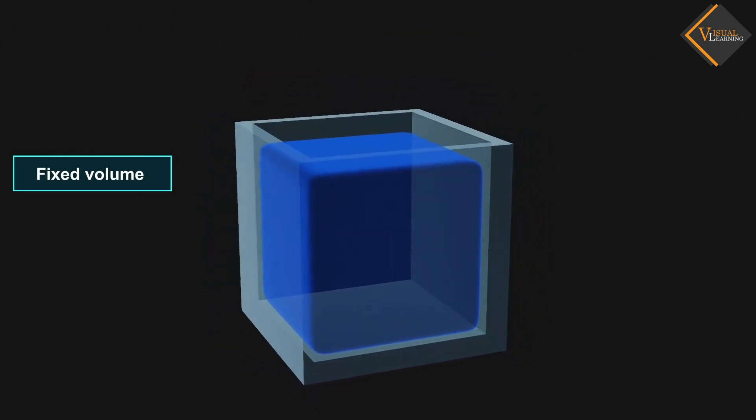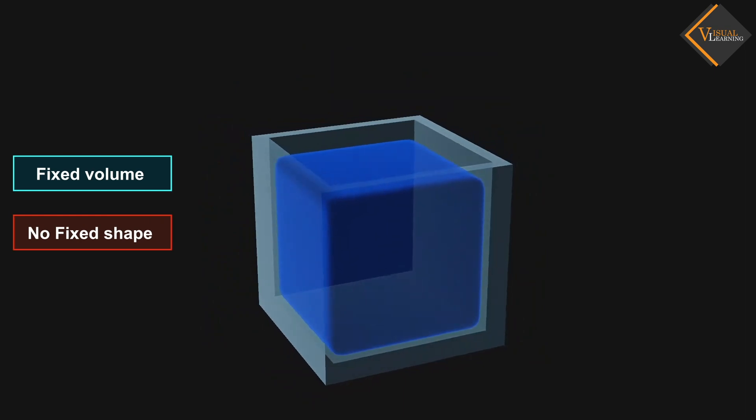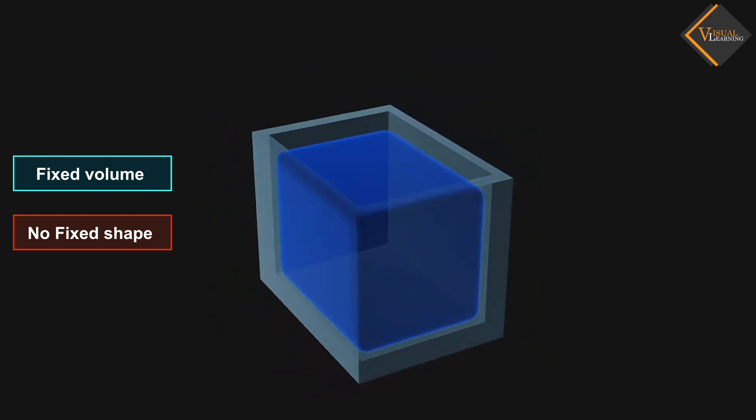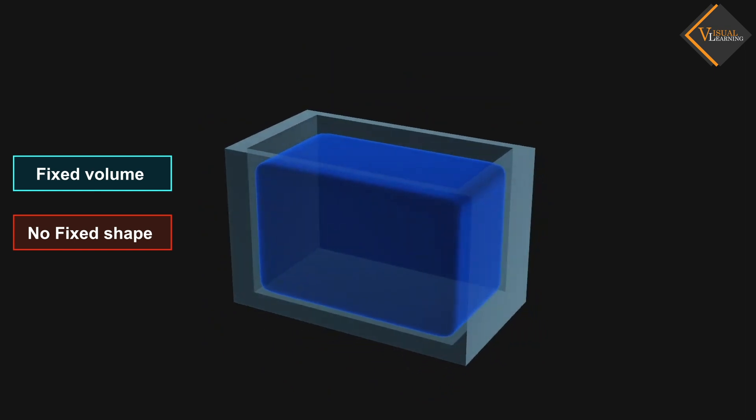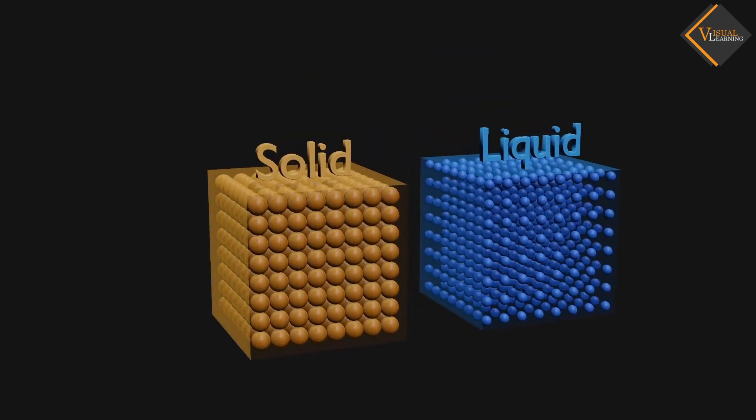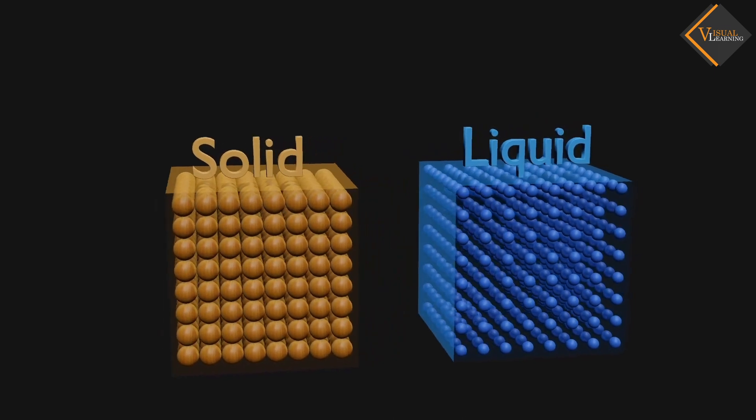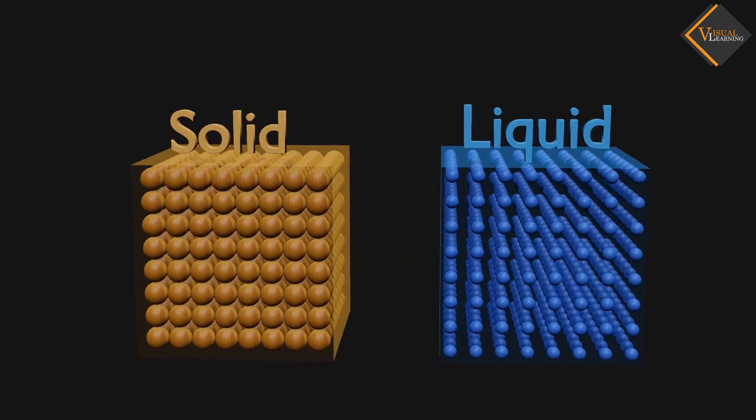Liquids have fixed volume but no fixed shape. It can take any shape of the container. In liquids, force of attraction between the particles is weaker than solids.